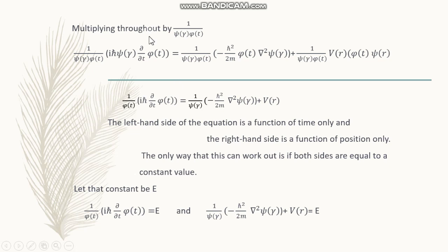What we are now going to do is multiply through by 1 divided by ψ(r)φ(t) — that is, divide the entire equation by ψ(r)φ(t). Since ψ(r) is independent of the time operator, it cancels from the time-derivative term. Similarly, φ(t) cancels from the spatial operator term, and since V is a constant, that term also gets cancelled and separated.